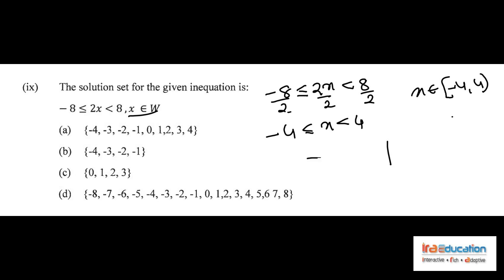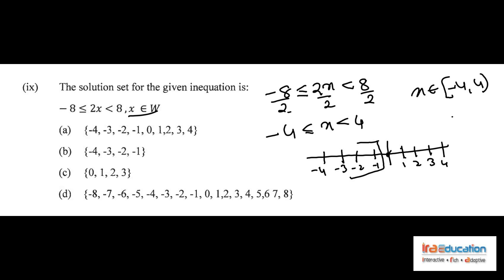Since x belongs to W (whole numbers), negative values are excluded. Plotting on the number line, whole numbers in [minus 4, 4) are 0, 1, 2, and 3. We exclude 4 because x is strictly less than 4. Therefore the solution set is {0, 1, 2, 3}, which is option C.